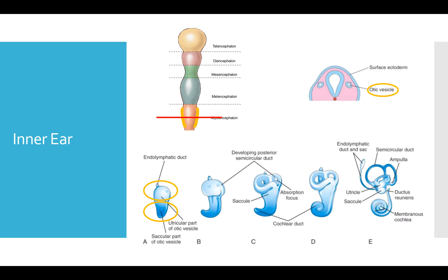So the utricular part develops into the adult semicircular ducts. And this begins as three disc-like structures that develop and then reabsorb in the center to form what we know as the adult semicircular duct.